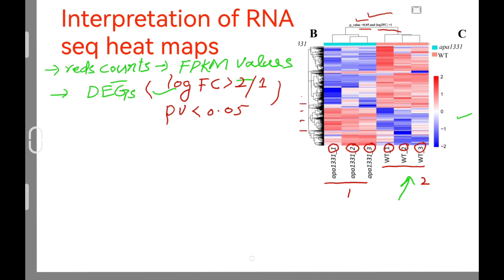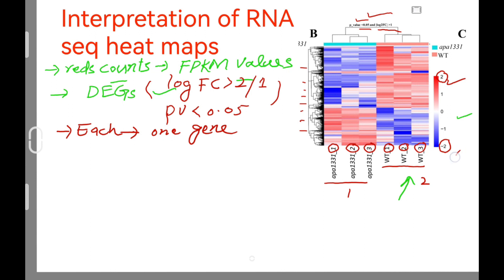Now we can see what this heat map is telling us. There are many lines, and each line represents one gene. Regarding the colors: the higher the expression value, the color would be red; as expression gets lower, the color would be blue. We can see that this group of genes was upregulated in wild type.